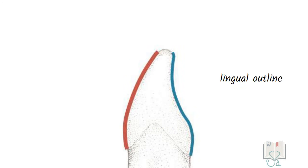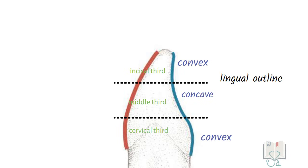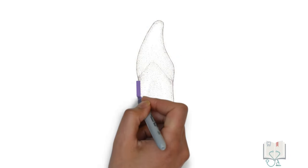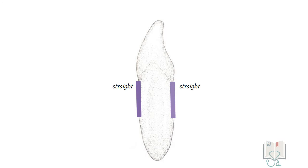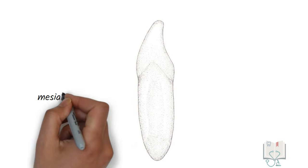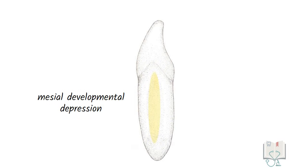The lingual outline is convex in the incisal third, concave in the middle third and convex again in the cervical third. Coming to the root, its labial outline and lingual outline are straight till the middle third and then starts tapering till the apex. A mesial developmental depression runs along the long axis in the middle third.